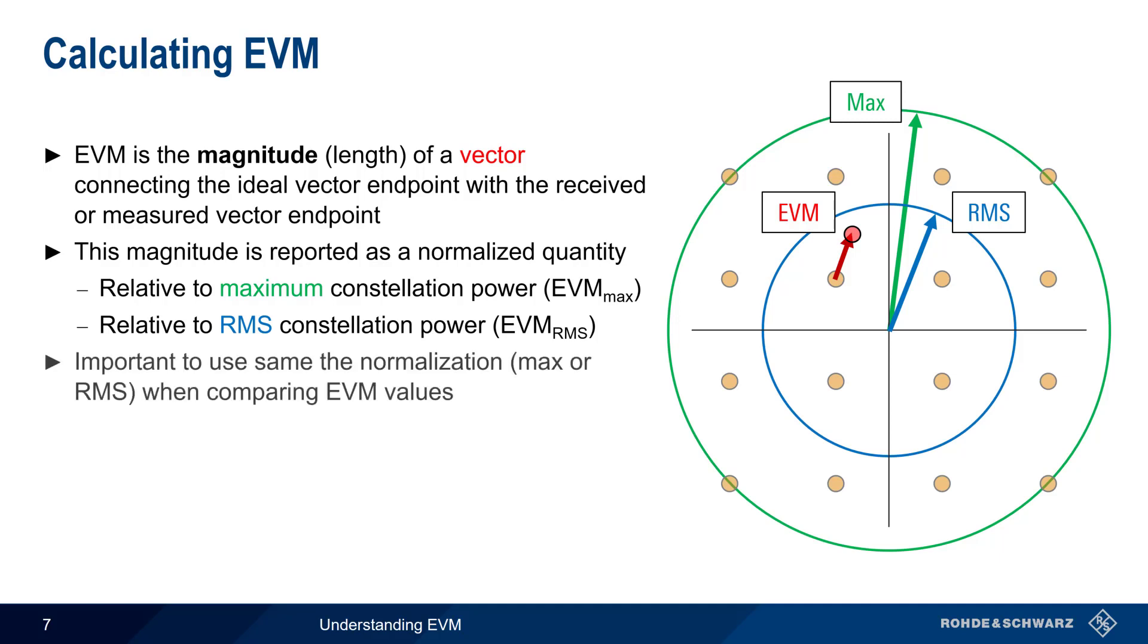When comparing EVM values, it is very important to be sure that the same normalization reference was used for each set of values, that is, max or RMS. EVM can be expressed either as a percentage value or in decibels.